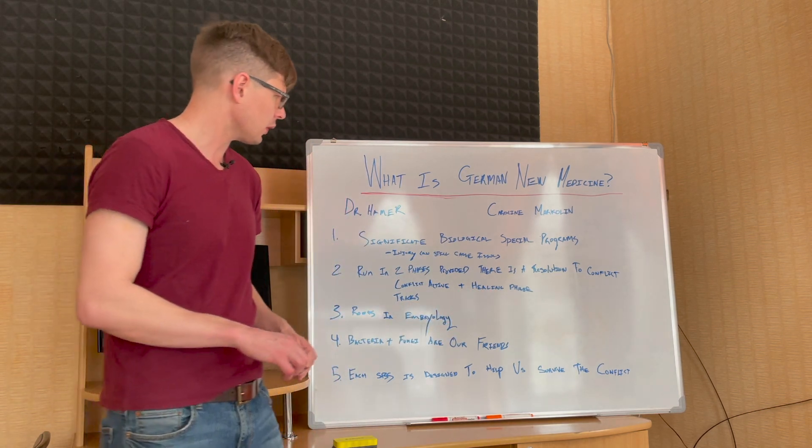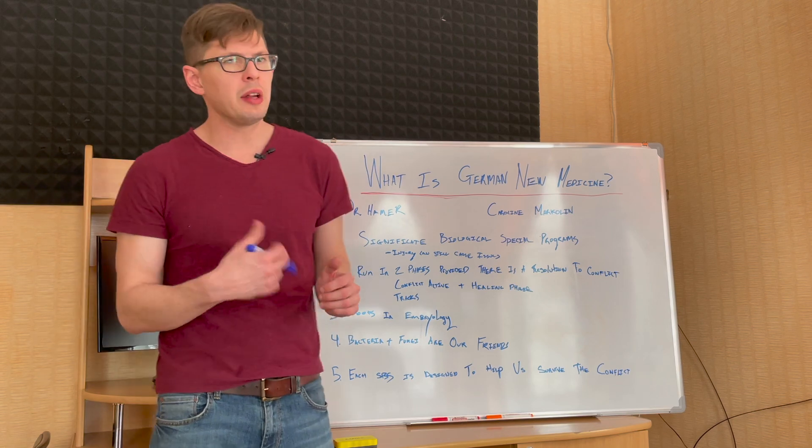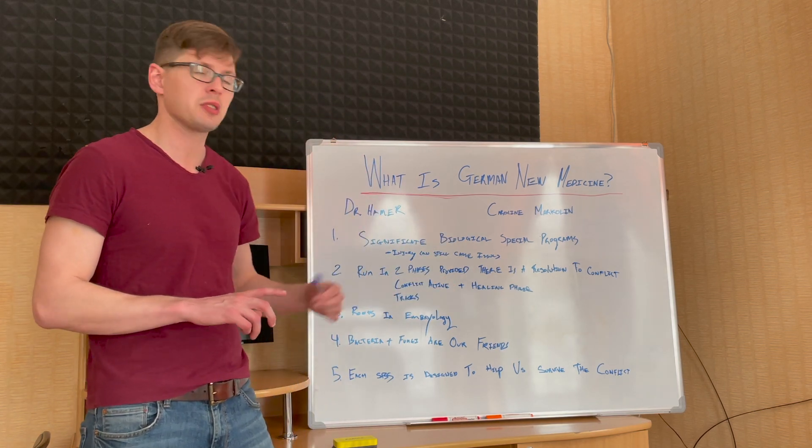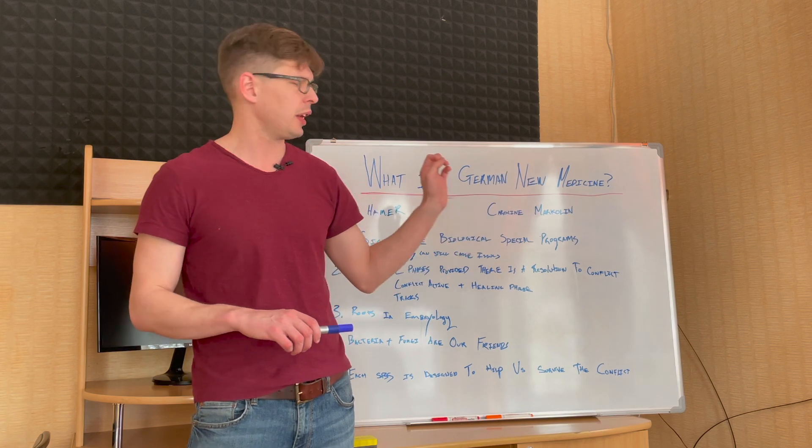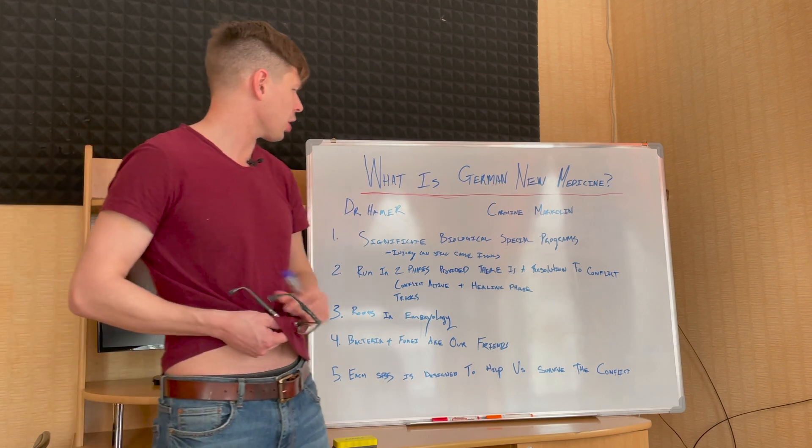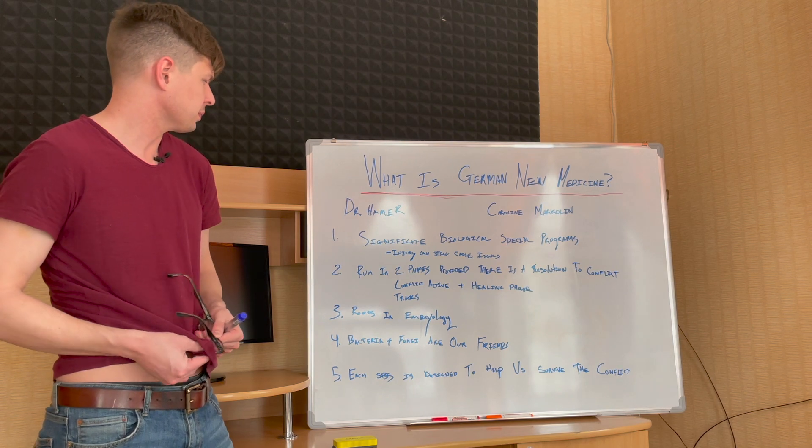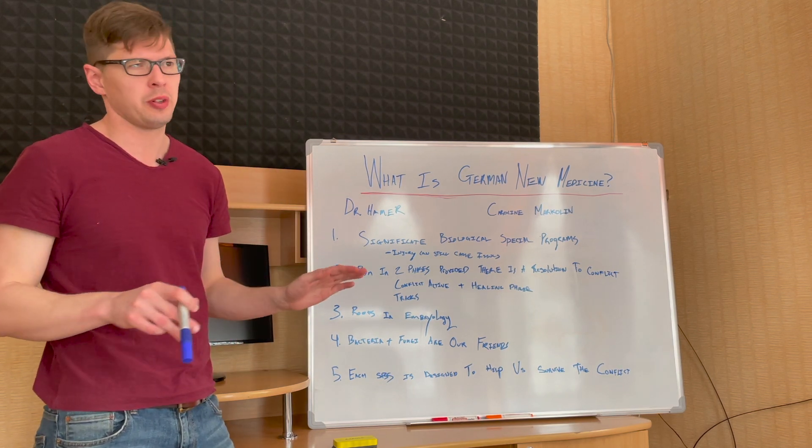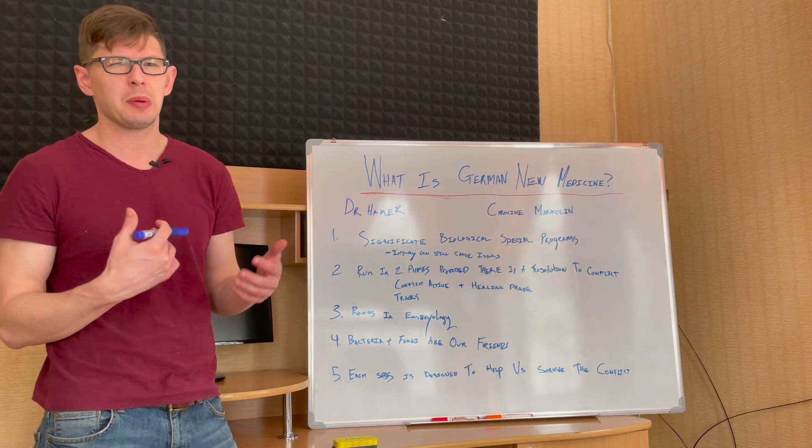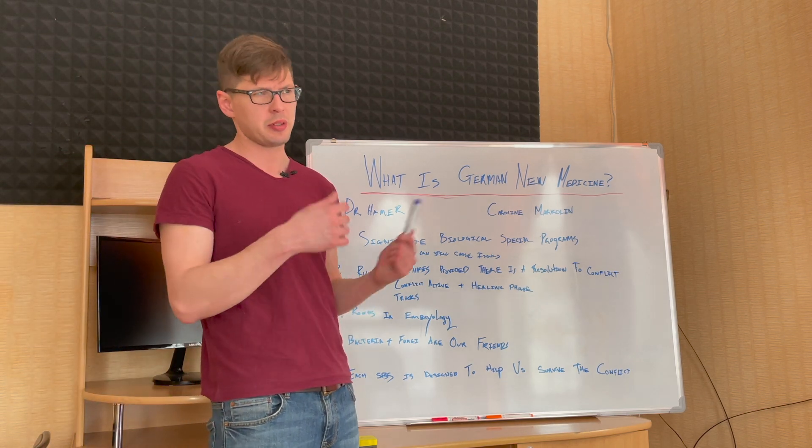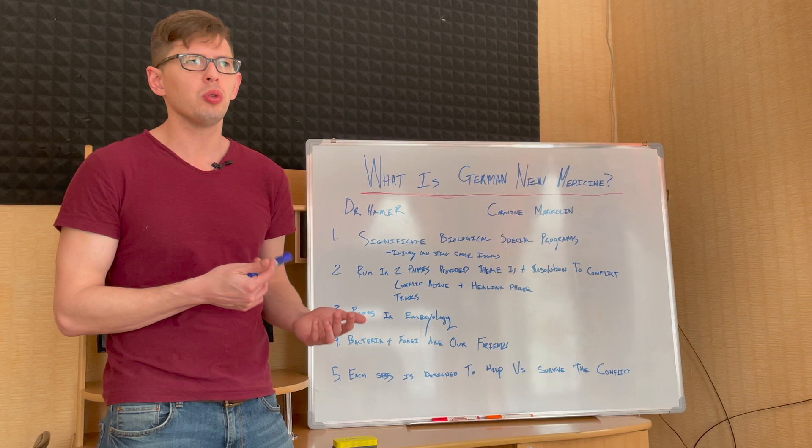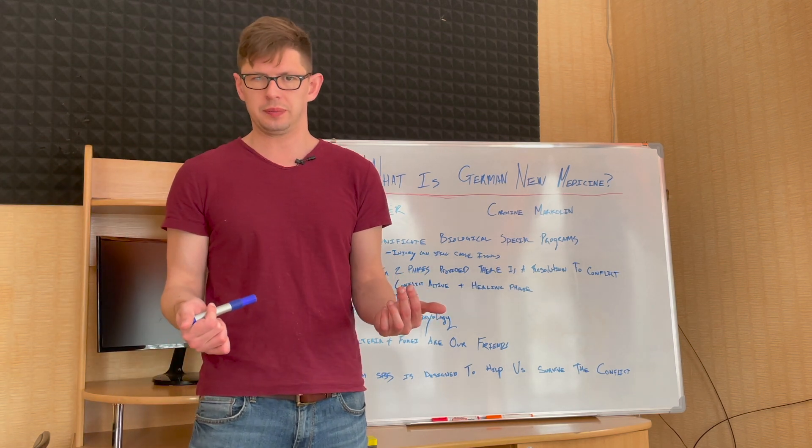These are all somehow one way or another controlled in the brain. So this is kind of where he started going with this. Caroline Markolin translated his work, worked with him very closely, translated his work into English, and it is available for free on learninggnm.com. Let's go over the five biological laws. This is a very quick overview of the laws that is not extensive by any means, but it's kind of a quick crash course to help you understand what German New Medicine is.